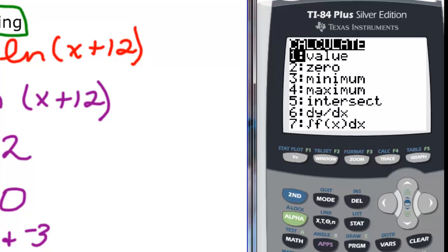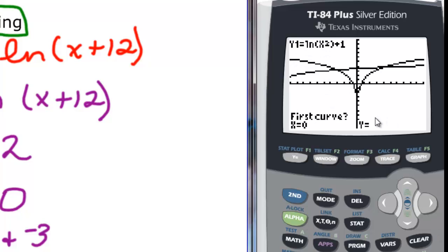So 2nd trace 5. And notice I don't have anything in my y right here, so I need to move my cursor until I do. And then I can just press enter, enter, enter for the first one. And there's my 4 and my 3.77.